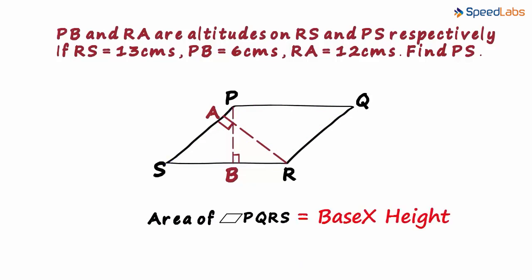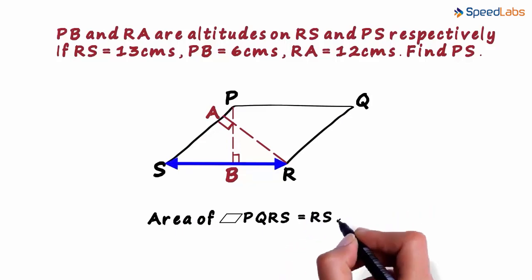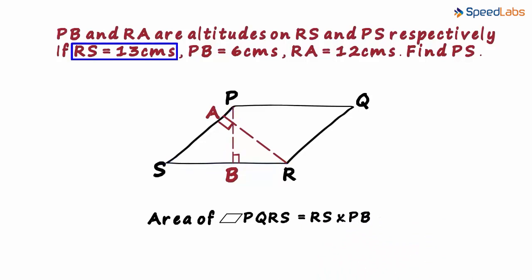Since it is base multiplied by height, the area will equal RS multiplied by PB. RS is 13 centimeters and PB is 6 centimeters. So the area would equal 13 multiplied by 6, which equals 78 squared centimeters.